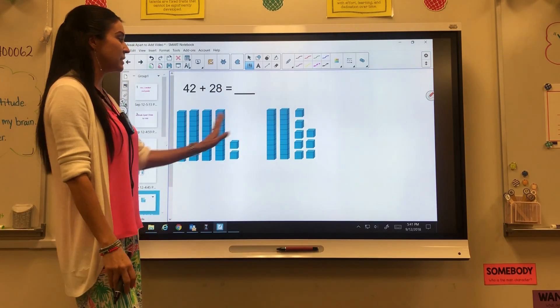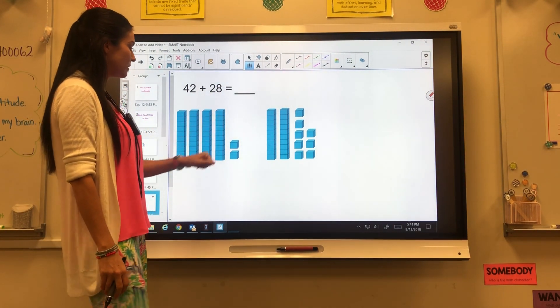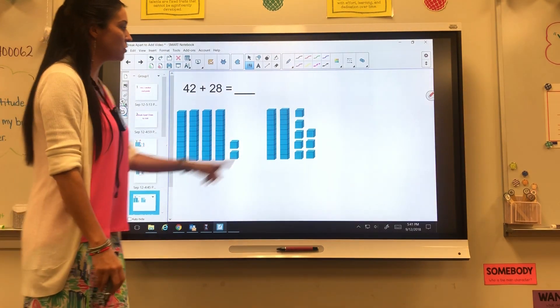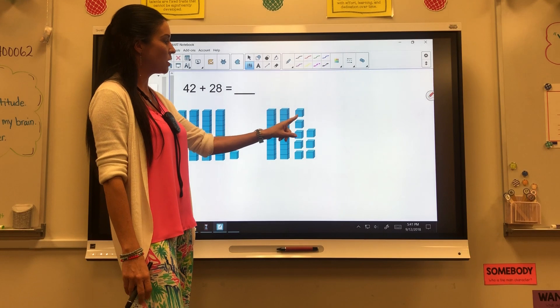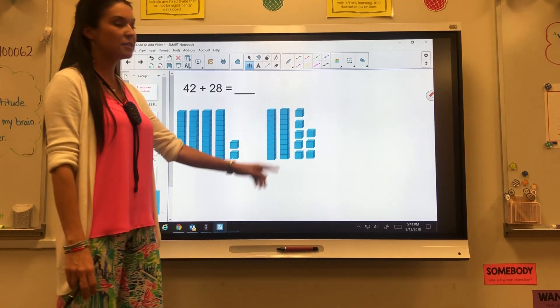Then we can have tens on both sides. Again, 42 plus 28. 10, 20, 30, 40, one, two is 42. 10, 20, one, two, three, four, five, six, seven, eight. That's 28.